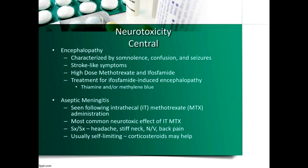Other central neurotoxicities include encephalopathy from high-dose methotrexate, which crosses the blood-brain barrier, and ifosfamide. Most chemo doesn't cross the blood-brain barrier, but these two agents at high doses can. Ifosfamide produces a toxic metabolite called chloroacetaldehyde (CAA) that crosses the blood-brain barrier and causes encephalopathy. This can be prevented or treated with thiamine (B1) or methylene blue — we give these agents if the patient experiences treatment-related issues.